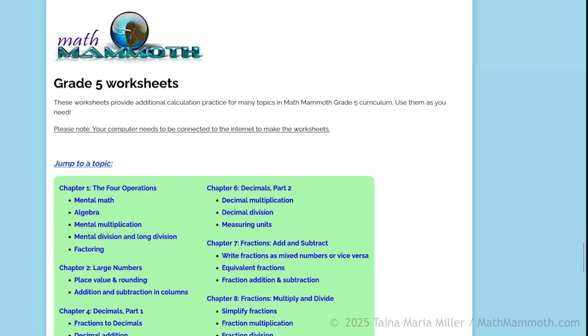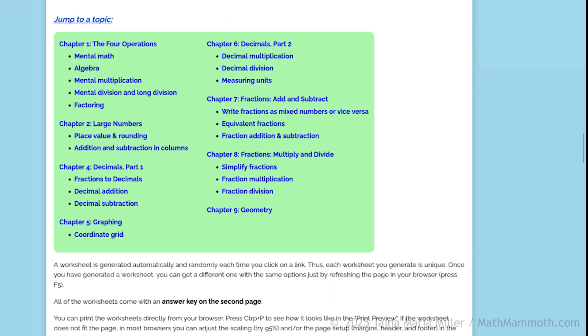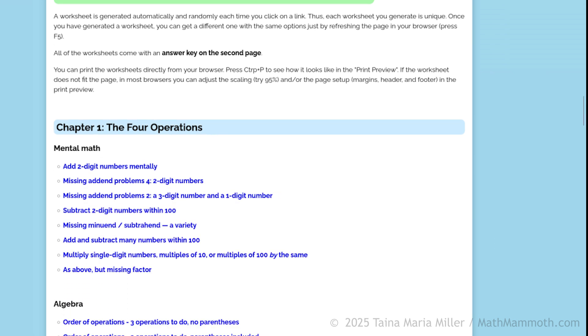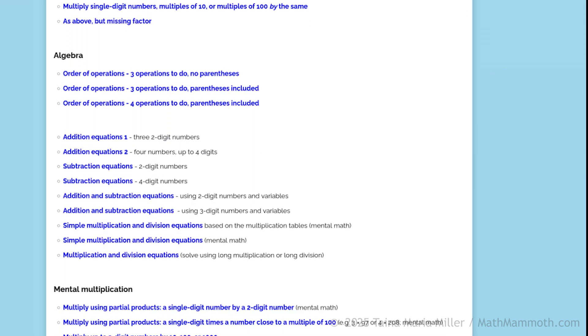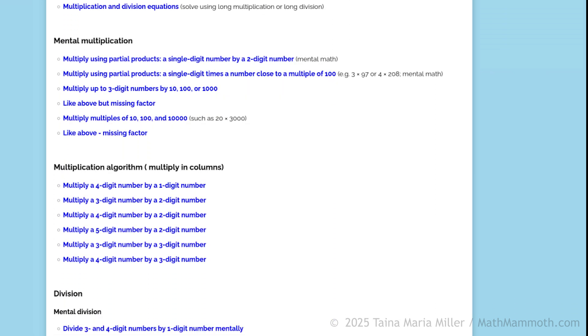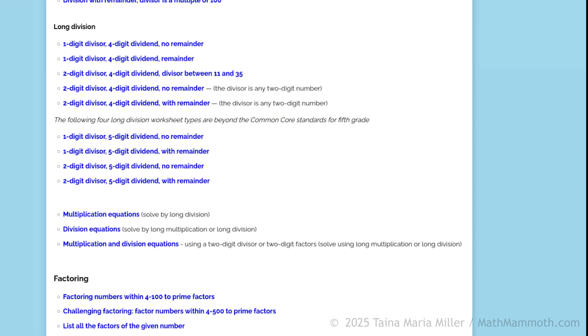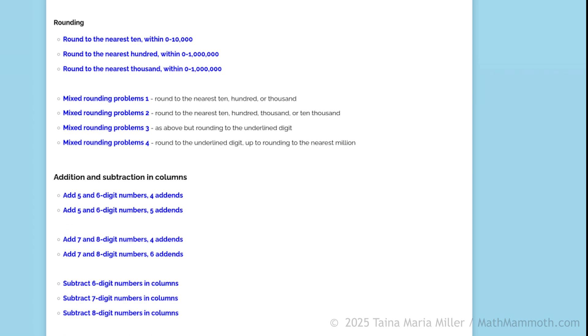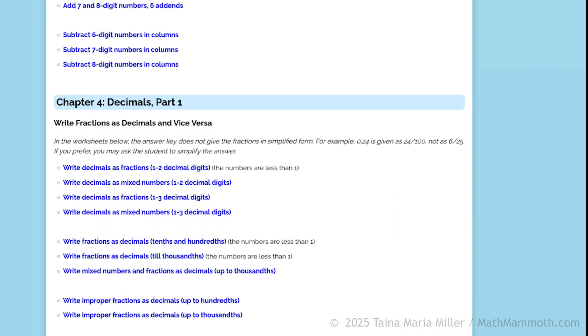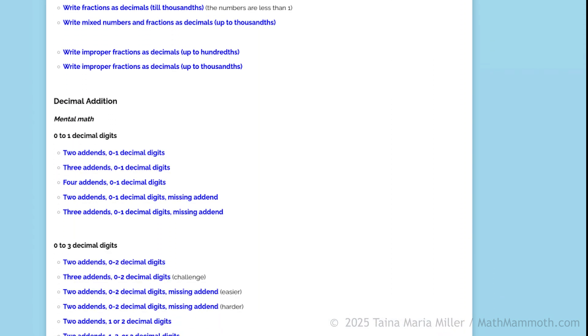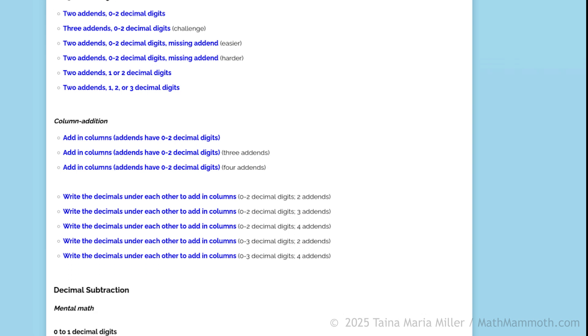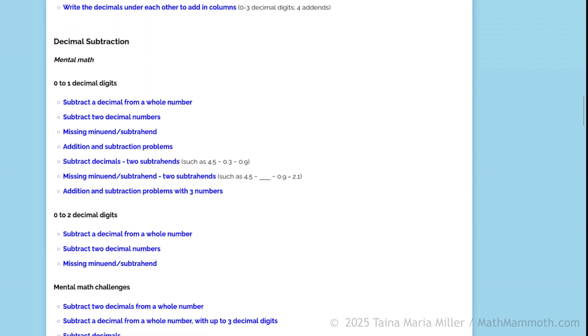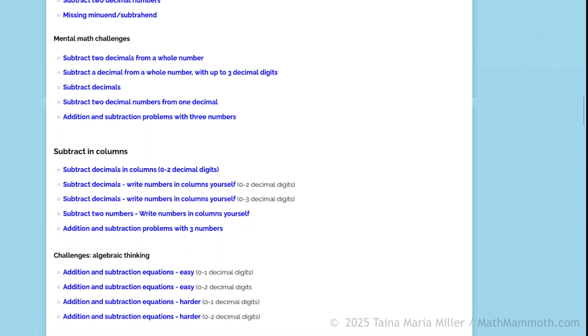There's one for each grade level, just for additional review. And typically you would use those chapter reviews and the mixed reviews to try to find the topics that the child has not mastered and then you can come to the worksheet generator. I don't say that you would use this on a daily basis because the work text itself has already a lot for most children to do.